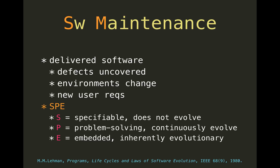Quite often the classification proposed by Lehmann in the 80s is used. It says basically that any piece of software falls more or less into one of three categories: S-type systems, P-type, and E-type systems.